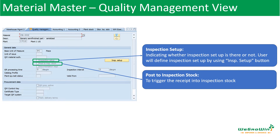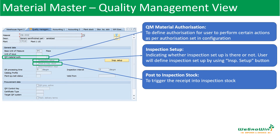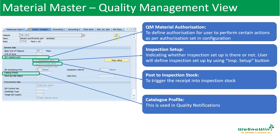It is available in purchasing and the scheduling view. Next, we have the quality management authorization field, which allows the quality department to add security defining who is authorized to use this information for each material. An authorization group is entered in this field to check whether the quality inspection user has the correct authorization to enter and maintain the details. And then catalog profile — the catalog profile is used to maintain the quality notifications.